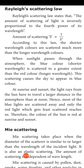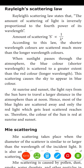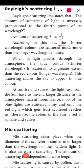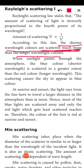According to this law, shorter wavelength colors are scattered much more than longer wavelength colors. Longer wavelength means lesser scattering; shorter wavelength means higher scattering. So: higher the wavelength, lesser the scattering; shorter the wavelength, higher the scattering.